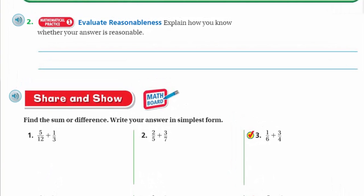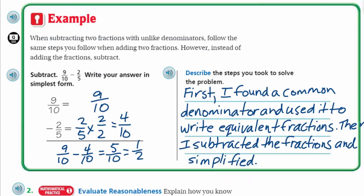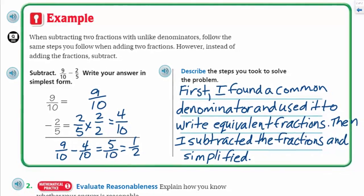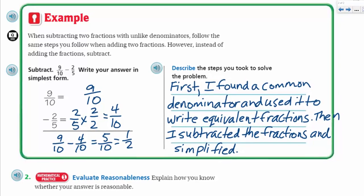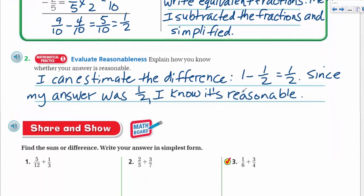That way, we can get our new denominator as tenths, which is what we want. We want those like denominators, but now we're subtracting. Nine-tenths minus four-tenths is going to equal five-tenths. And since five is half of ten, I would just rewrite that as one-half. Explain how you know whether your answer is reasonable. Nine-tenths is almost one, and two-fifths is about half, so it seems like my answer should be half.